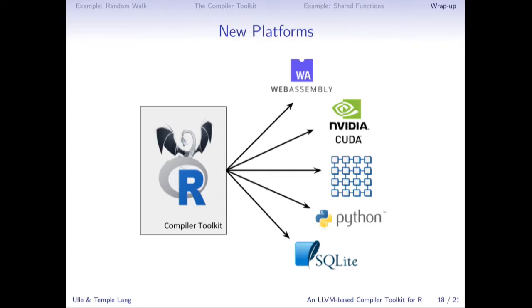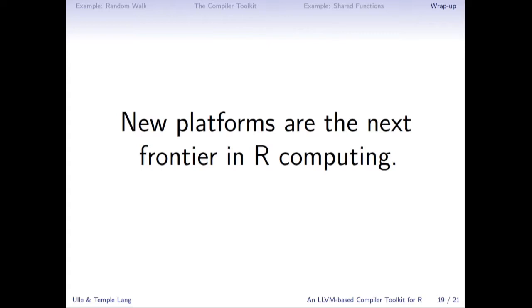The key point is not just better performance, but that we can use R code with new platforms by compiling. We showed using R code with a database, but we can also compile using LLVM to create kernels for GPUs without writing C code, or compile to JavaScript so we can write logic for D3 applications in R rather than JavaScript, and also target distributed systems and other libraries and technologies like Python. I really believe these new platforms are the next frontier in R computing.